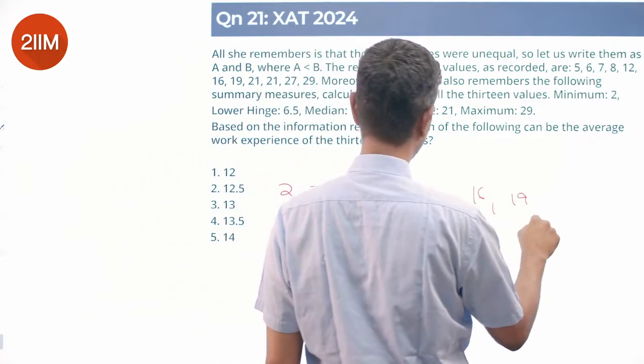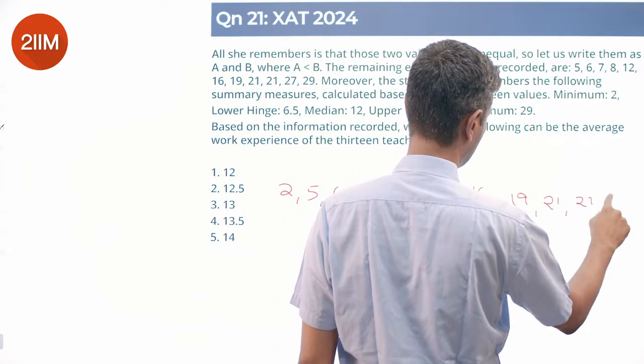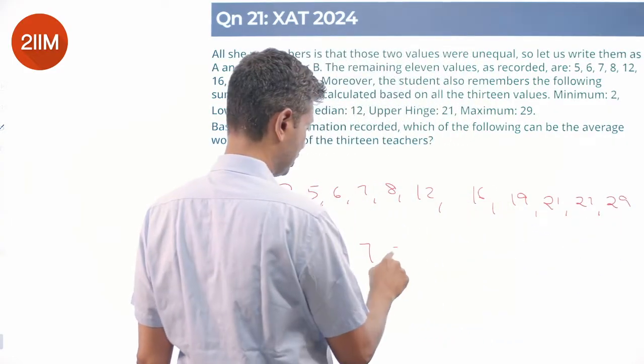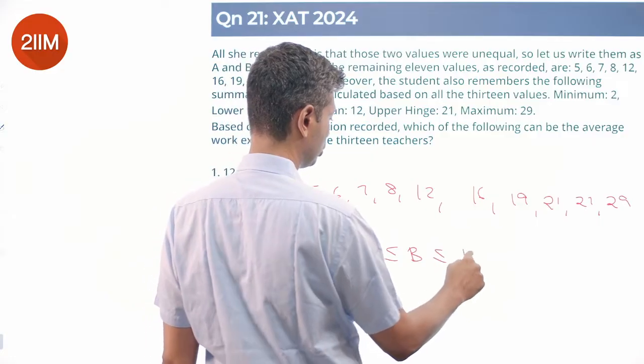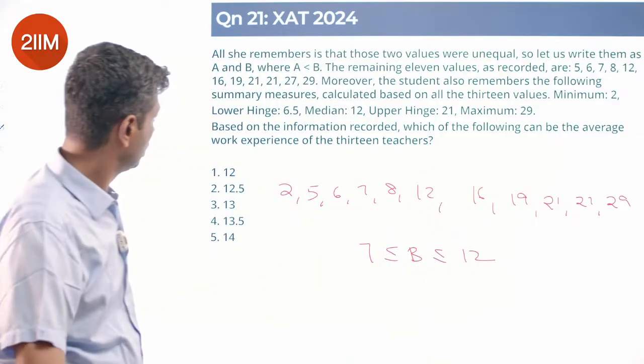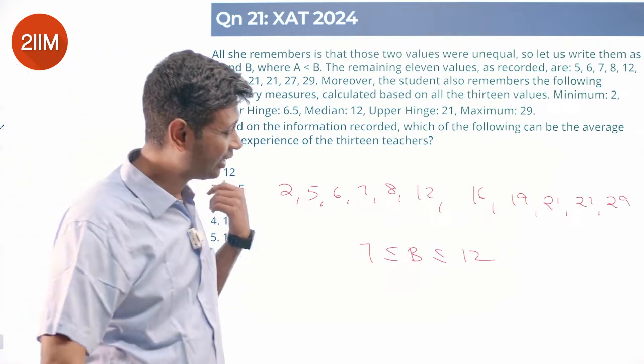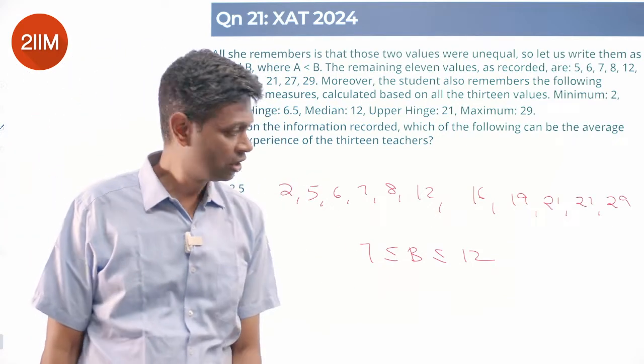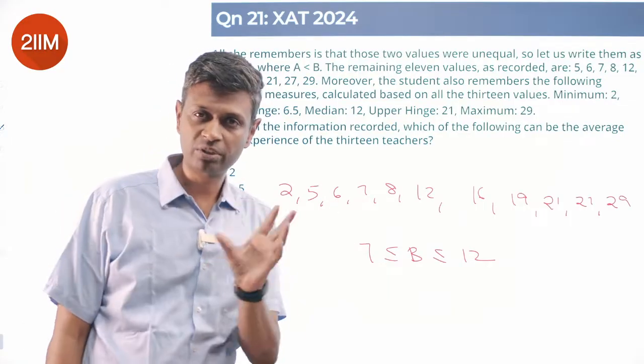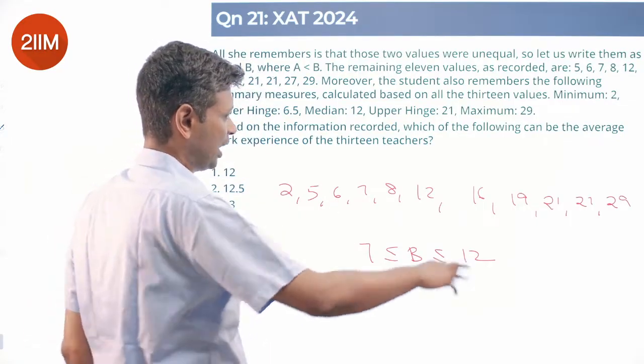Based on the information recorded, which of the following can be the average work experience of the 13 teachers? Add everything up, divide by 13, that's the average. We know that the missing number is from 7 to 12. Start from here.